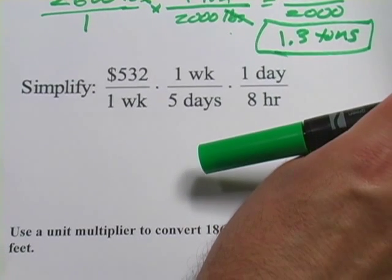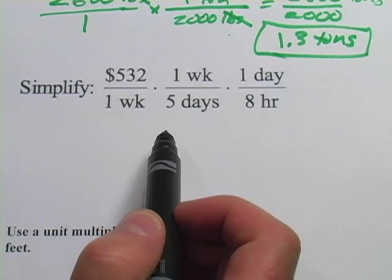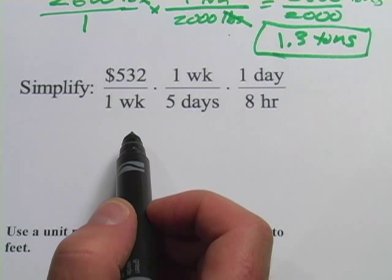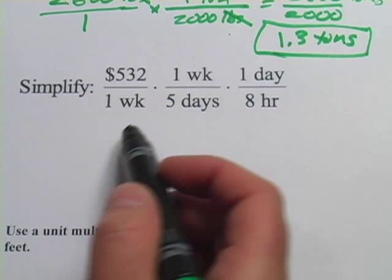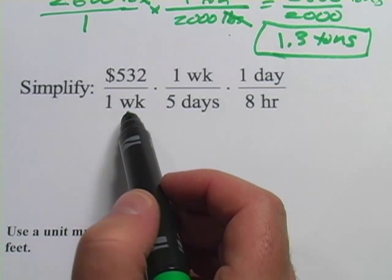Let's take a look at this. This says simplify, and they've really done most of the work for us. Looks like somebody's trying to figure out how much money they're going to earn, or how much money they're earning per hour.